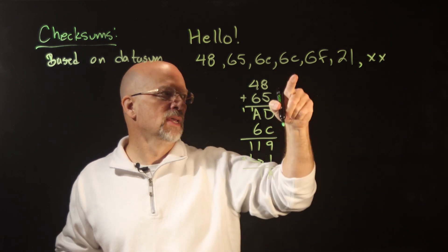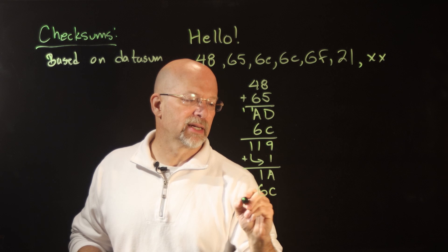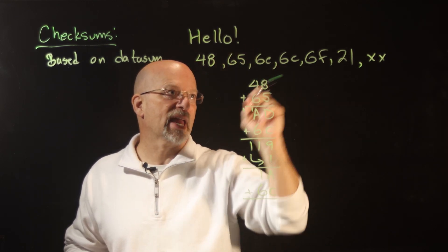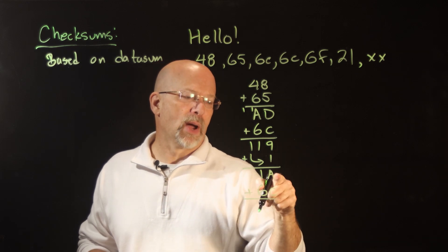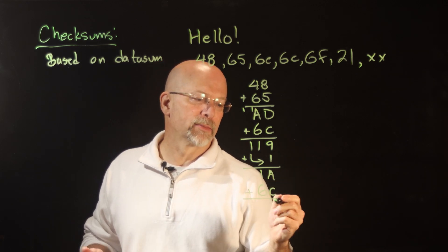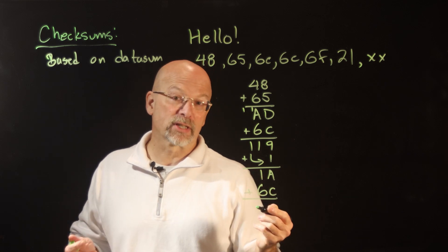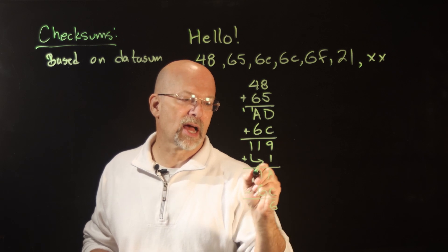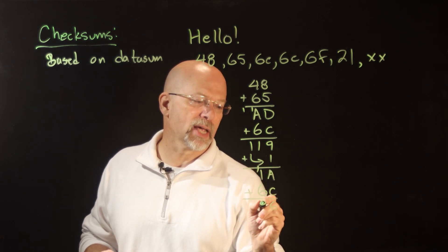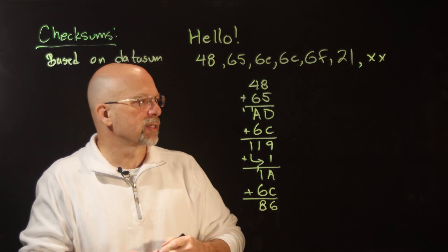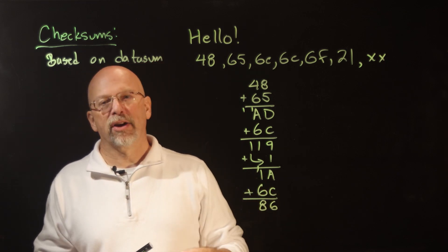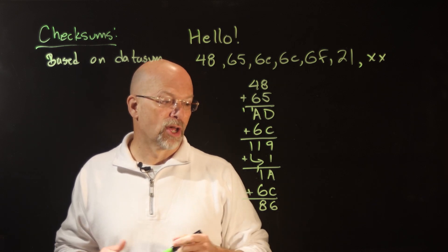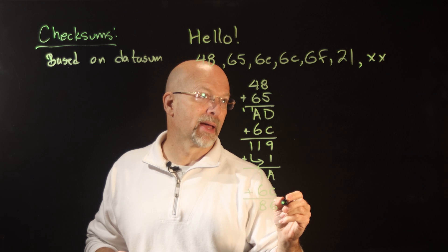Now we add the second L, another 6C. A is 10, C is 12, so 10 plus 12 is 22 — bigger than 16, so we pull 16 out, leaving 6 with a carry into the next column. 1 plus 1 plus 6 is 8, giving us 86. This doesn't generate a carry out of the byte width, so we don't need to add anything back in.